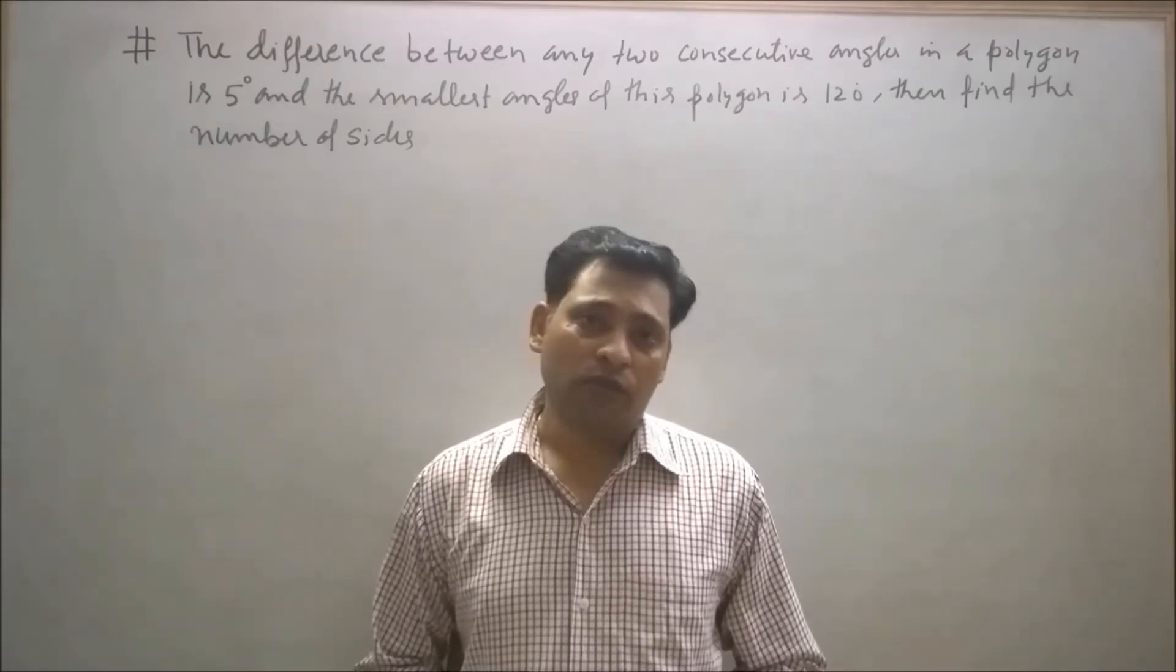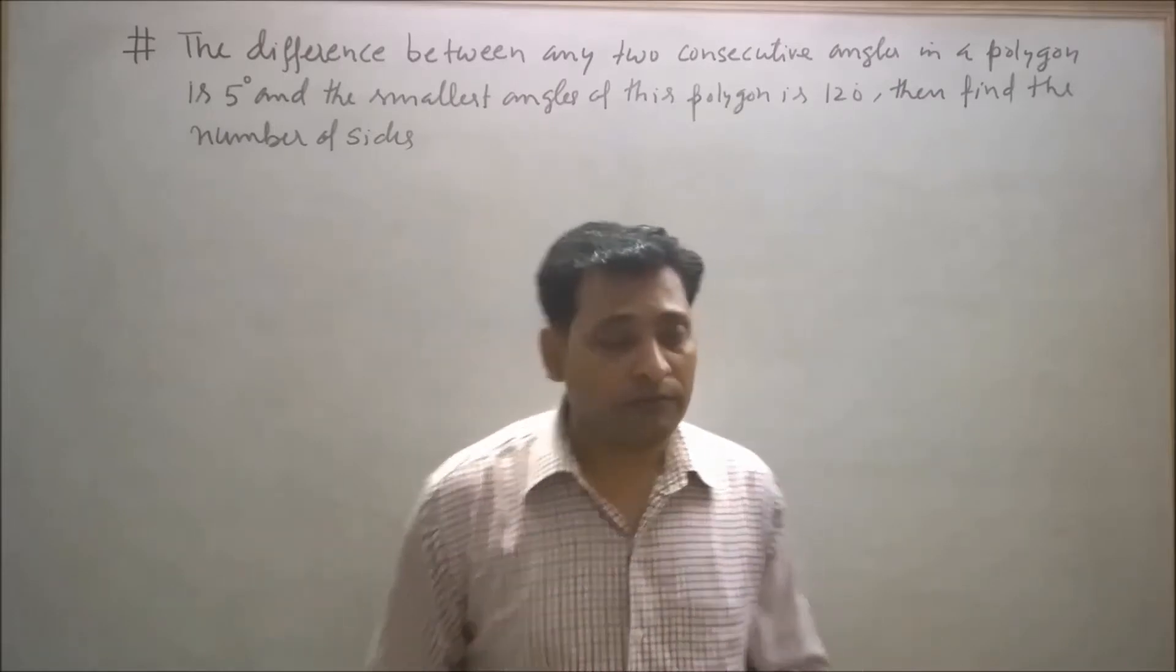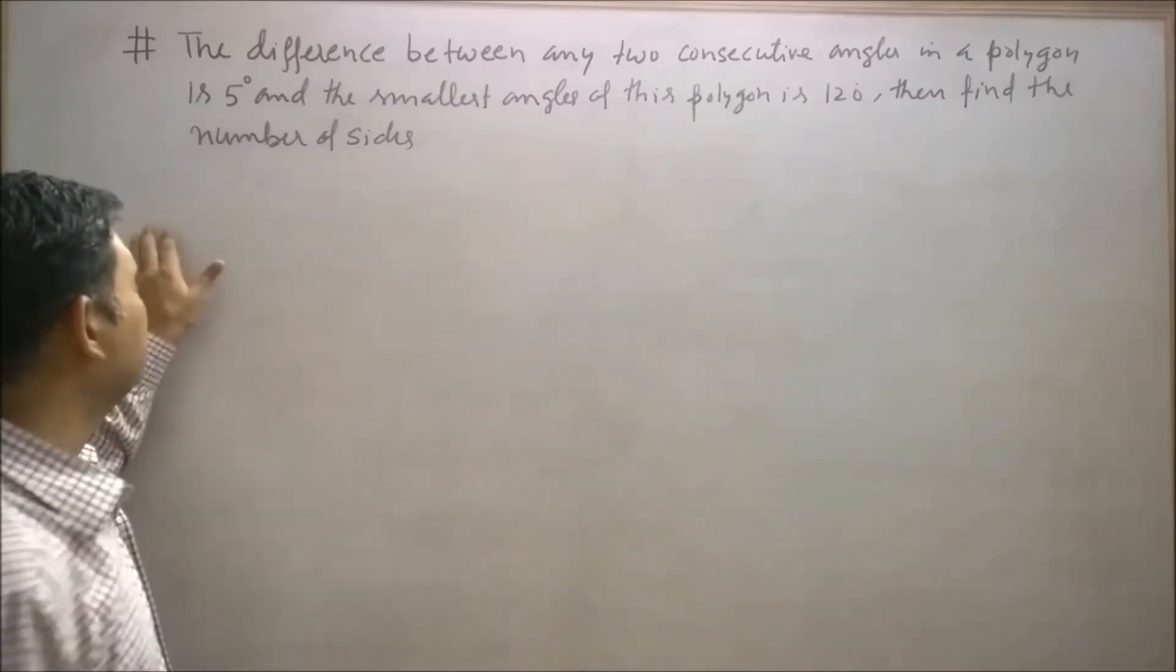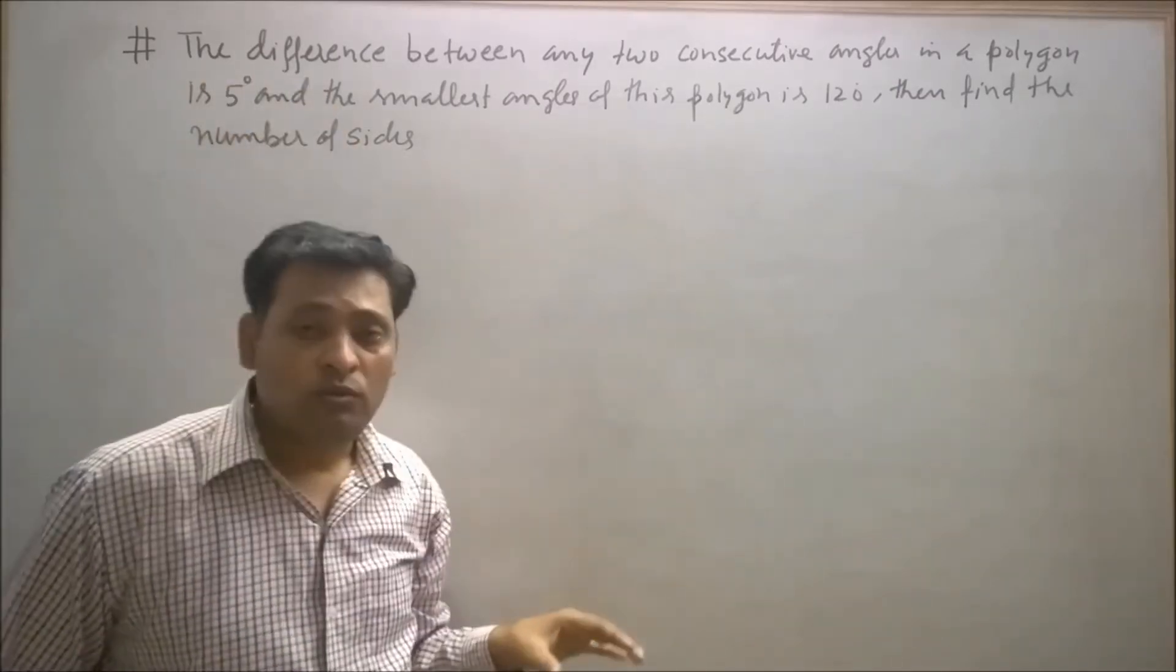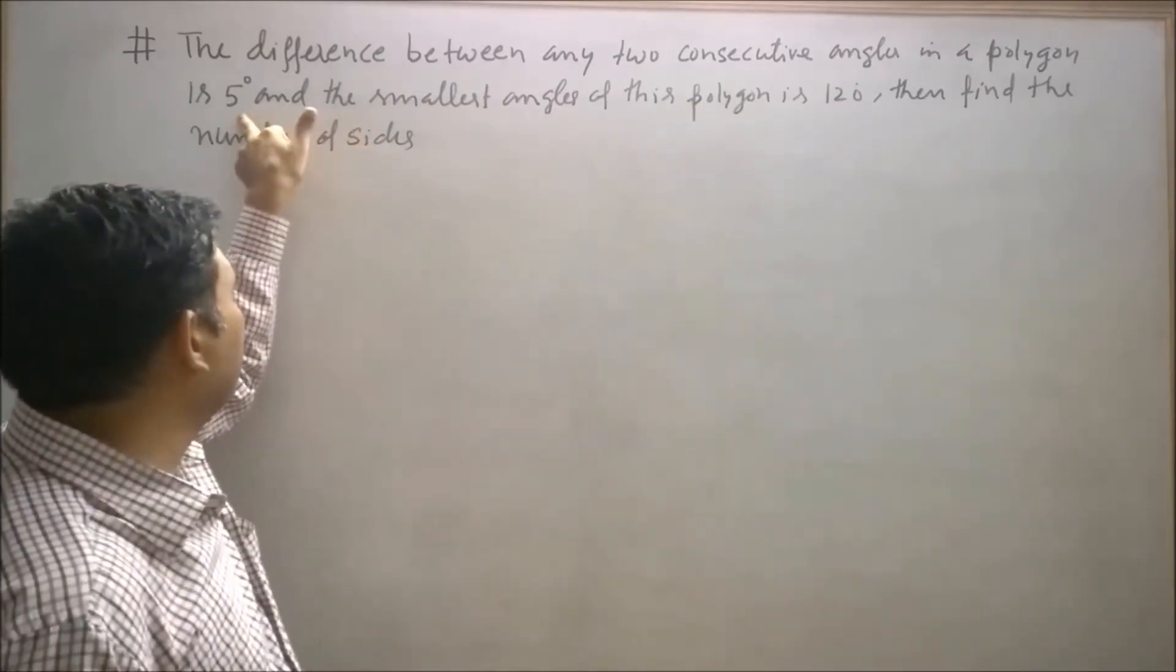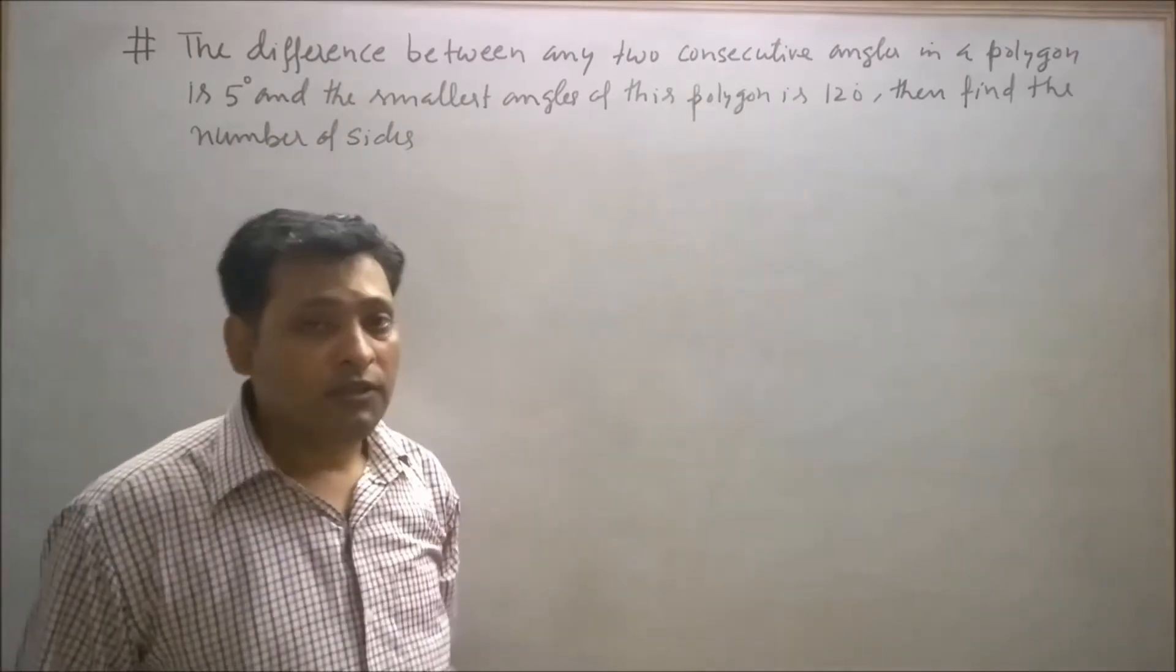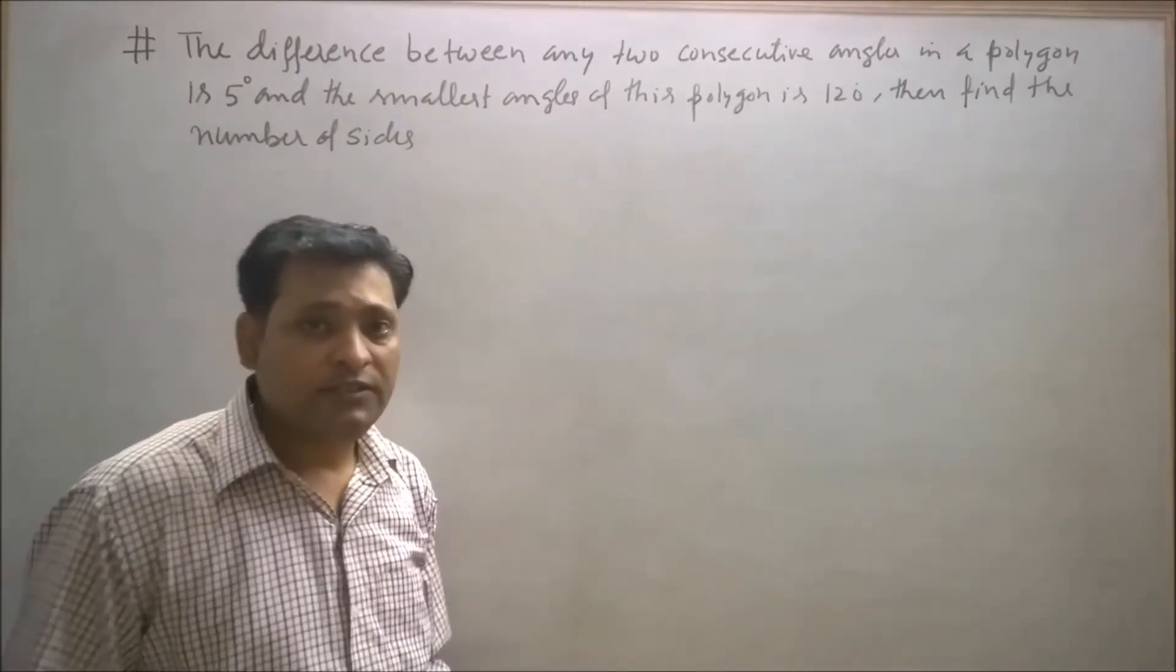In today's lecture, I'm going to solve a good question on the basis of arithmetic progression. The question says the difference between any two consecutive angles in a polygon is 5 degrees and the smallest angle of this polygon is 120 degrees. Find the number of sides in the polygon.